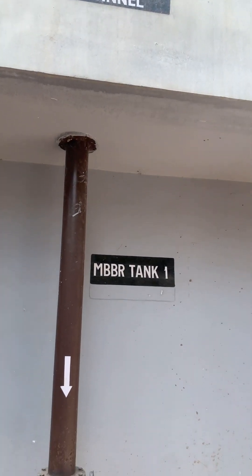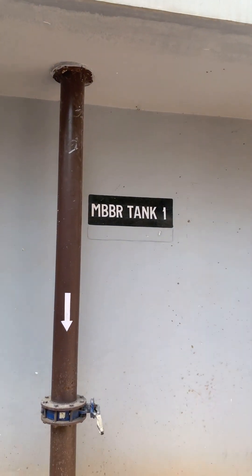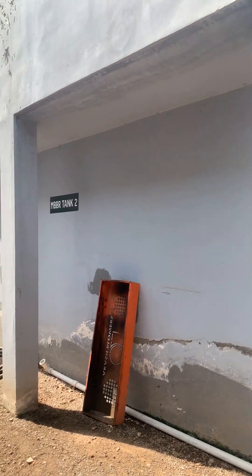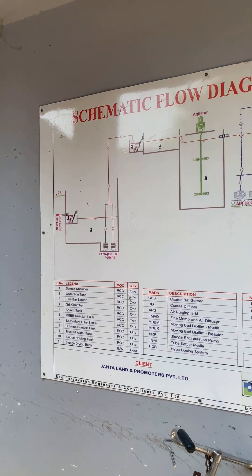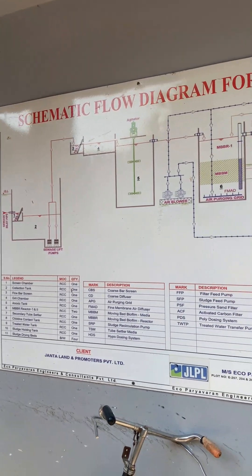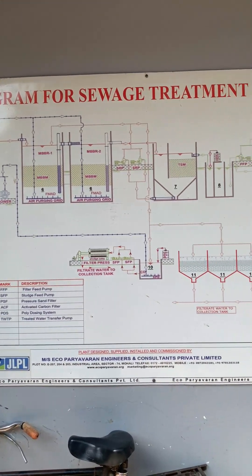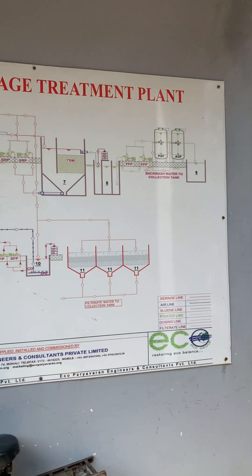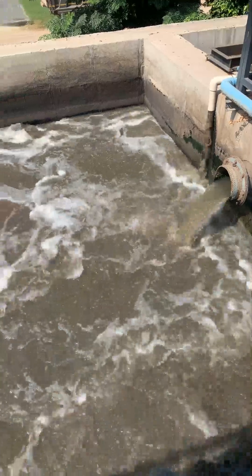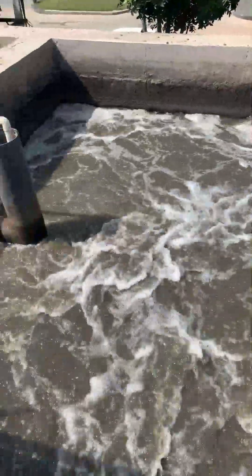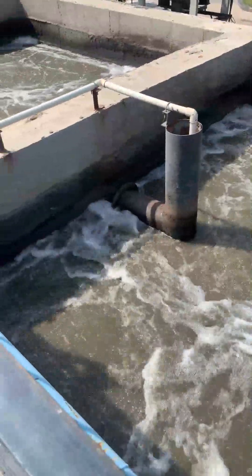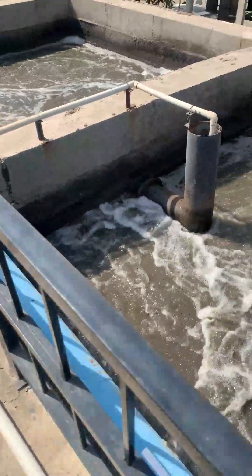Secondary Treatment: Biological processes take center stage during the secondary treatment phase. Here, microorganisms play a crucial role in breaking down organic matter that remains in the water after primary treatment. The primary goal is to reduce the concentration of organic pollutants, making the water cleaner and safer for the environment.